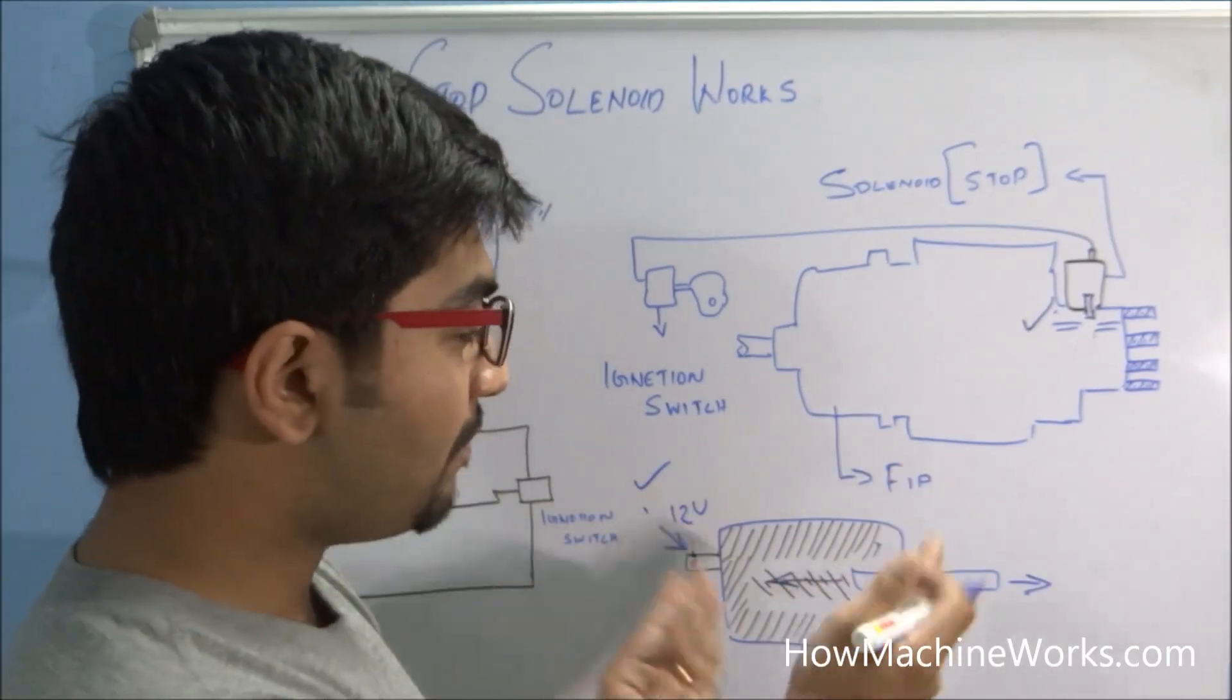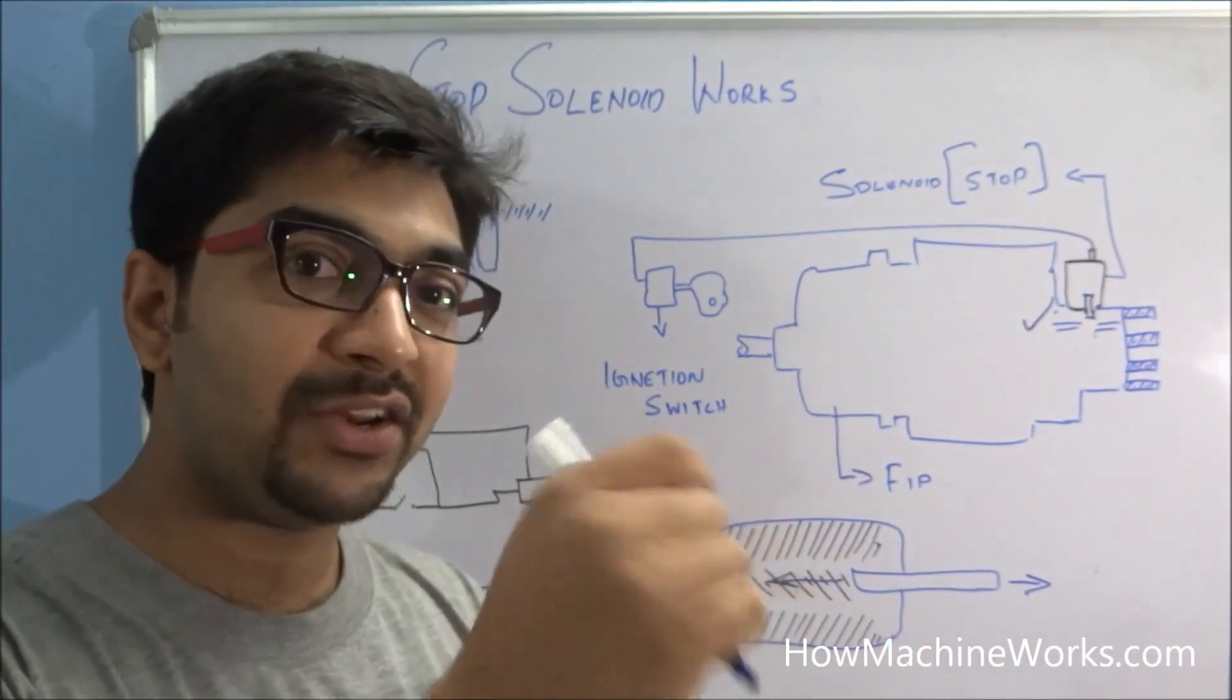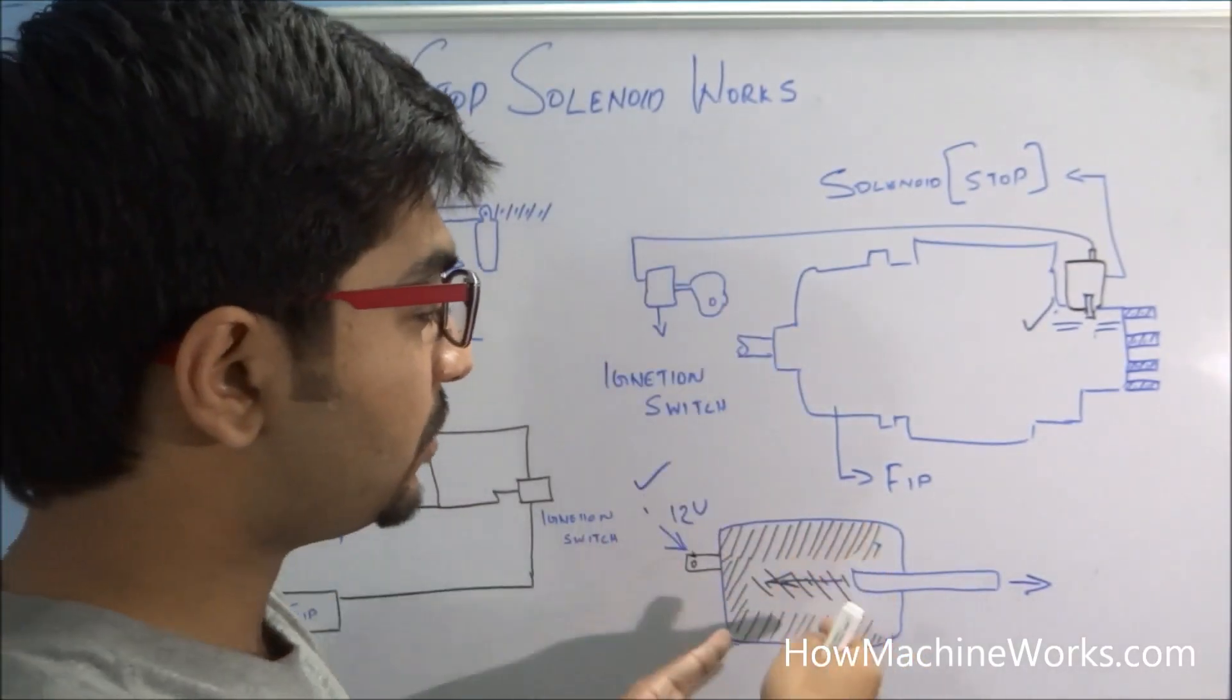This is exactly controlled by a stop solenoid and the ignition key, which actually gives the power from the battery to the stop solenoid.